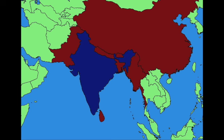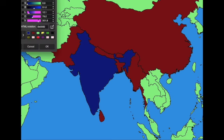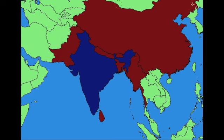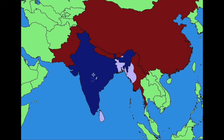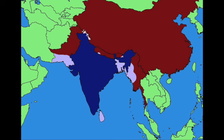Luckily India is prepared, and they have the advantage at first. India takes out Sri Lanka, manages to take out Bangladesh quickly, moves into Myanmar, moves up into Bhutan taking nothing, Nepal taking nothing, and into southern Pakistan taking Karachi and all of its coast.